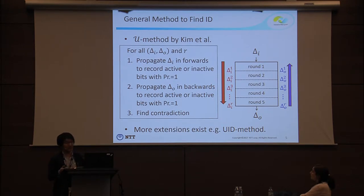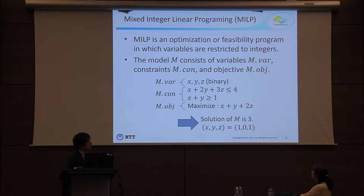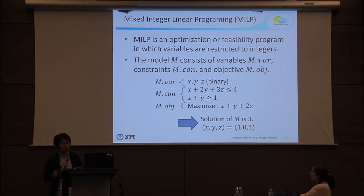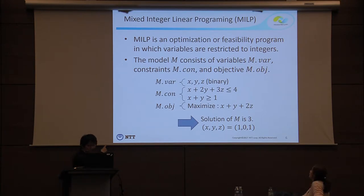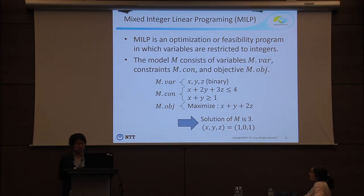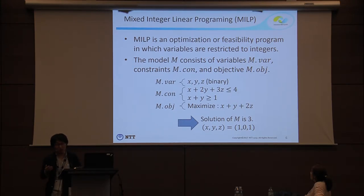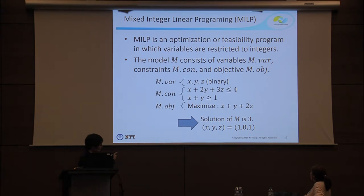Our new tool is completely independent from this type of research because it uses mixed integer linear programming (MILP). MILP is an optimization or feasibility program where variables are restricted to integers. MILP consists of three structures: variables, constraints, and an objective function. For example, x, y, z are variables restricted to binary values. We have two constraints from the inequalities, and our goal is to maximize x + y + 2z. The solution is x=1, y=0, z=1. Using an MILP solver such as CPLEX or Gurobi, we can practically find this solution.